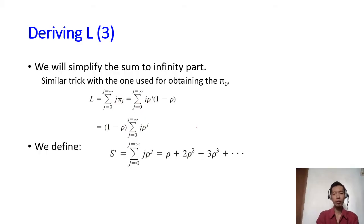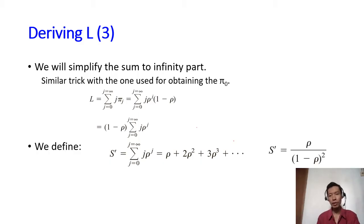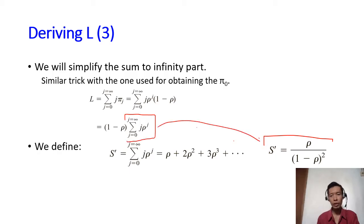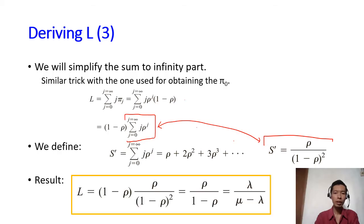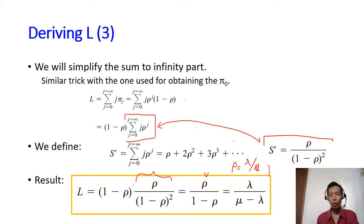Remember that we represented that summation as S prime. From the previous simplification, S prime equals rho over (1 minus rho). So we can replace the summation with S prime. We obtain the formula to calculate L, which is (1 minus rho) times S prime, and we can simplify it further. Recalling that rho equals lambda over mu, we can also express L in that form. All these formulas may be used to calculate L.